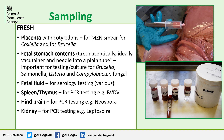These are the samples we need. Placenta with cotyledons — we do an MZN smear on this looking for Q fever and screening for brucella. Fetal stomach contents need to be taken aseptically; the easiest way to do this is with a vacutainer into a plain tube. We do culture for bacteria and fungi on stomach contents, which is why we really don't want any contamination. Fetal fluid can be used for serology. Spleen or thymus for PCR testing for BVD. We also need hindbrain for PCR testing for Neospora, and finally kidney for Lepto PCR.